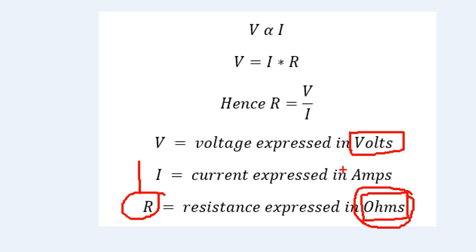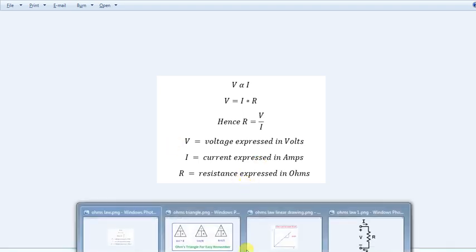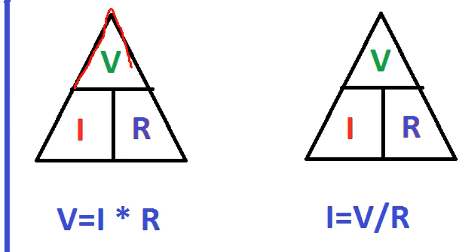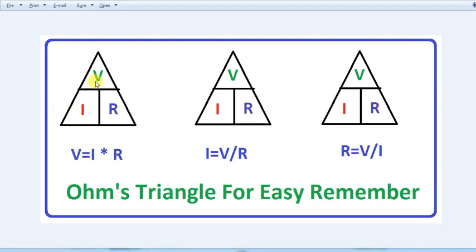Let's take a look at the Ohm's triangle. This is a general concept, so we are going to express everything. Let's take a look at the Ohm's triangle. First is voltage, which is very easy. If you put V on one side, then it will be V. We have I and R as well. So we have three quantities and we will take all three.